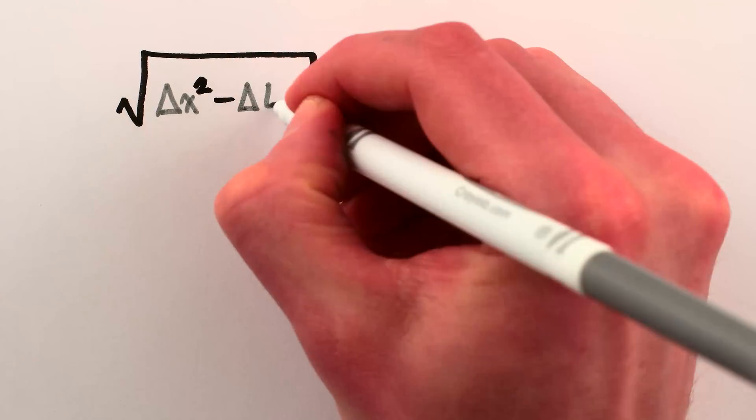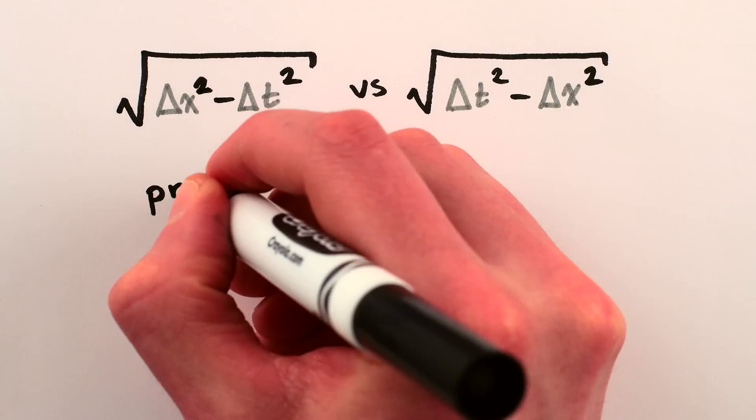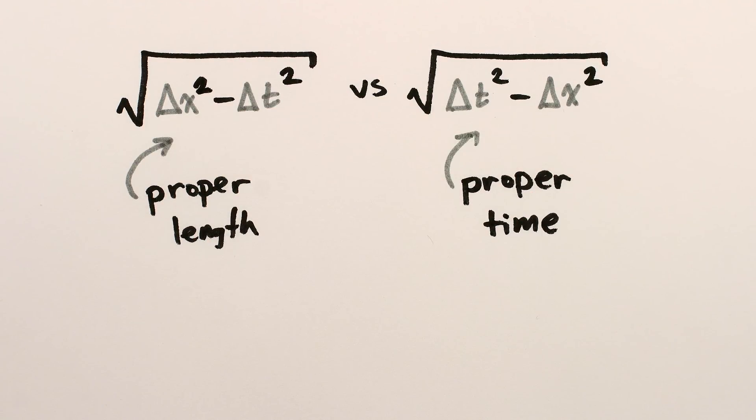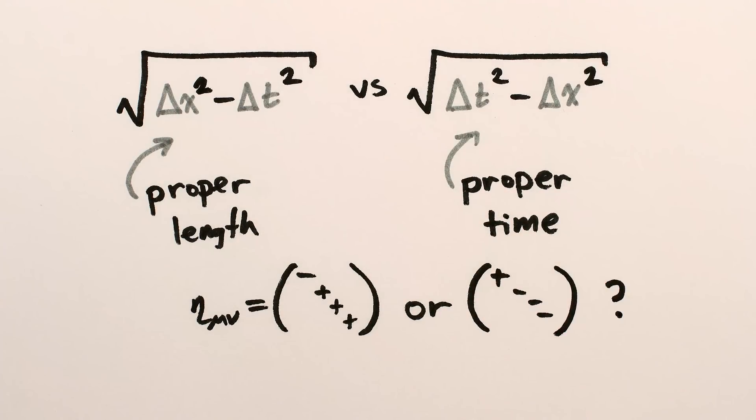The astute among you may have noticed that there was some funny business going on regarding whether or not we subtracted distance from time or time from distance in the spacetime interval. The short story is that it just depends on whether you're dealing with a true length or a true time, though long story is an age-old debate about what's called the signature of the metric.